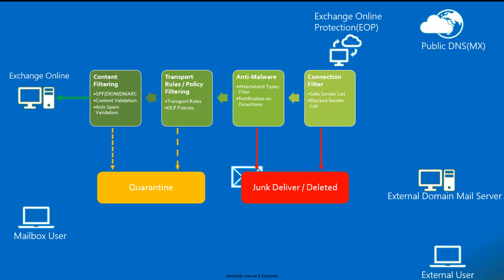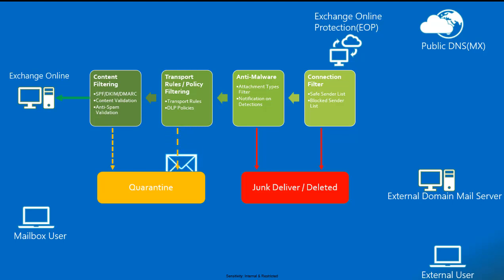Once the anti-malware filter finds the mail is genuine and has no problems, the mail is processed by the next scanning engine — transport rules and data loss prevention. In this filtering stage, DLP policies configured for your environment are applied. If any transport rules or DLP policies are triggered, the mails will be quarantined and the user will get a notification to release, delete, or leave the mails. Quarantined mails are automatically removed after 14 days. If no transport rules or DLP policies apply, the mail proceeds to the next scanning engine — content filtering.